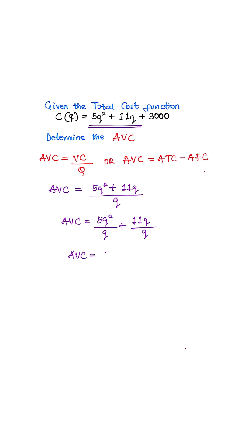5q squared divided by q is 5q plus 11q divided by q is 11. And this is the simplified average variable cost function.